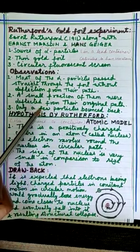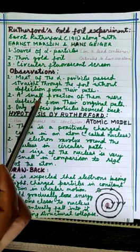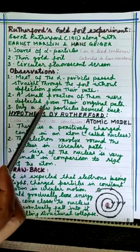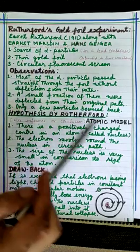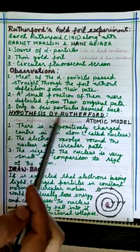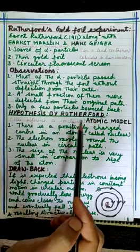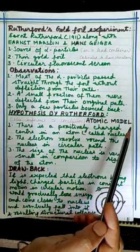The observations of Rutherford's experiment were just opposite to Thomson's model and that's why it was absolutely discarded by Rutherford. He gave his own hypothesis which is famous as Rutherford's atomic model.